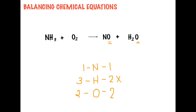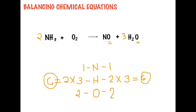We need to multiply the product side hydrogen by three to make it six, so we write 3 before H2O. On the reactant side, we multiply by two to make it six as well, giving us 2NH3. This makes hydrogen six on both sides. However, it has affected nitrogen, making nitrogen on the reactant side two. And our oxygen on the product side is also affected: three plus one makes four.